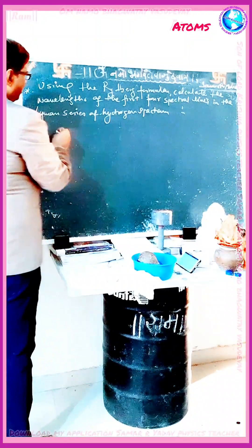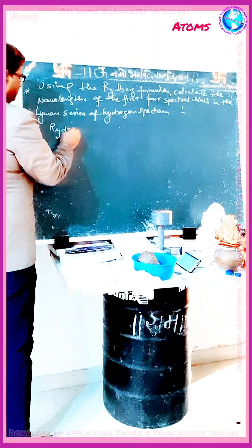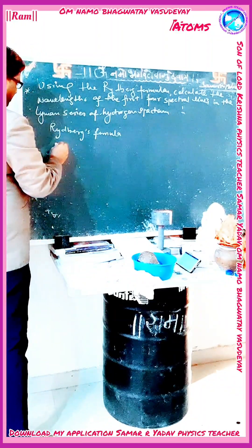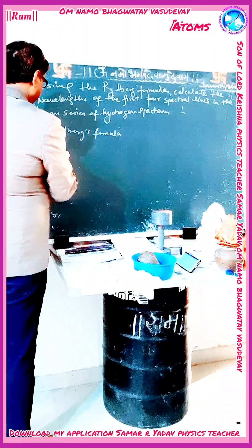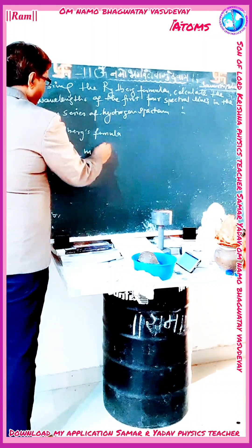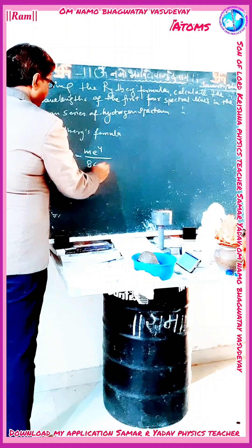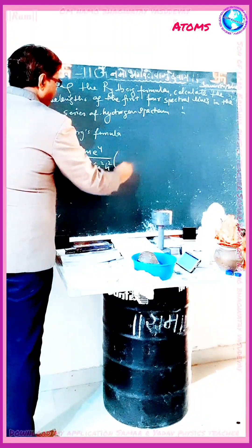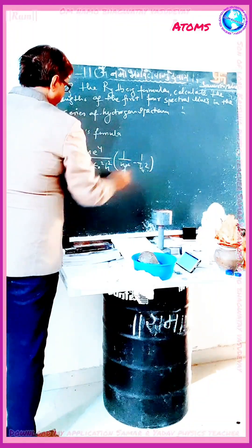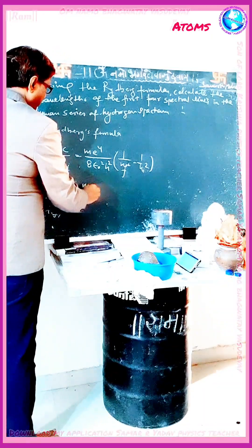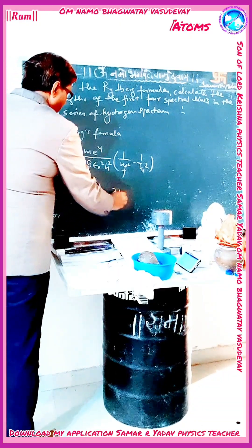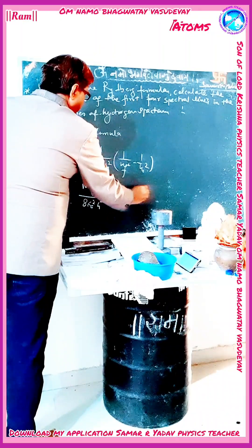Now we know that the Rydberg formula: hc upon λ_if is equal to m·e⁴ upon 8·ε₀²·h² into (1/n_f² minus 1/n_i²), where m·e⁴ upon 8·ε₀²·h² is equal to 21.76 × 10⁻¹⁹ J.